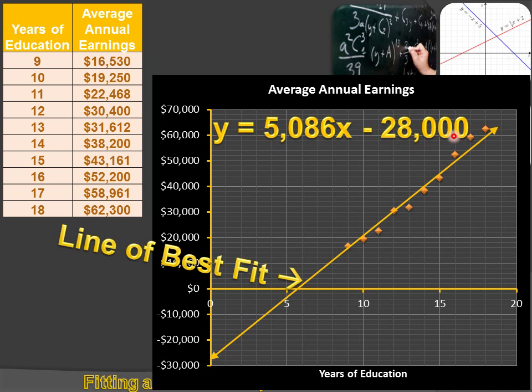5086 is my slope. And b, my y-intercept, well, that's way down here at minus $28,000. So, y equals 5086x minus $28,000 represents the relationship between years of education and average annual earnings.